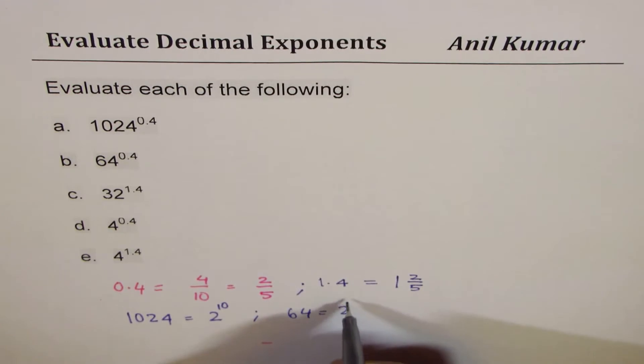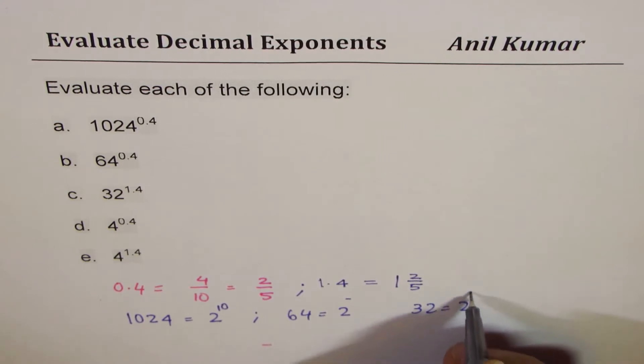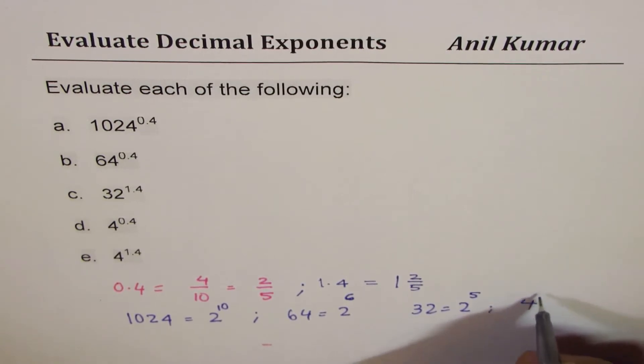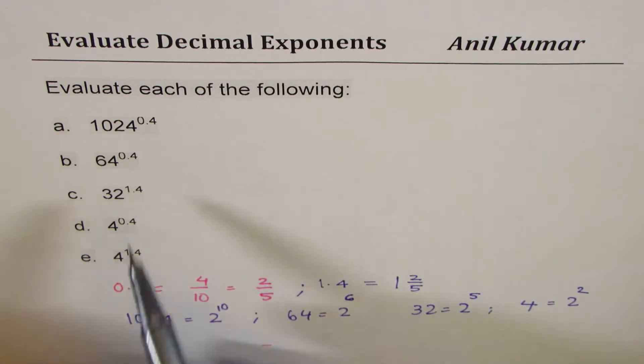64 could be written as 2 to the power of what? And 32 could be written as 2 to the power of what? So 32 is 2 to the power of 5, 64 is 2 to the power of 6. And as you know, 4 is 2 squared.